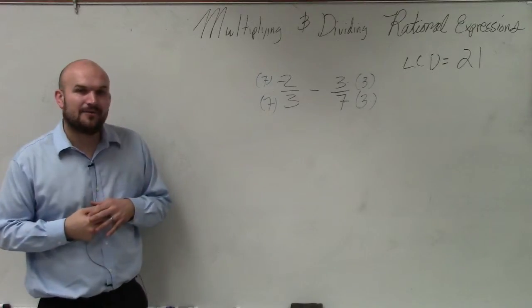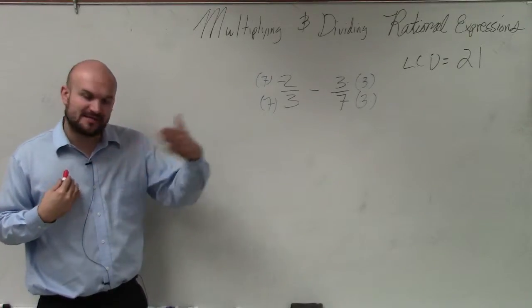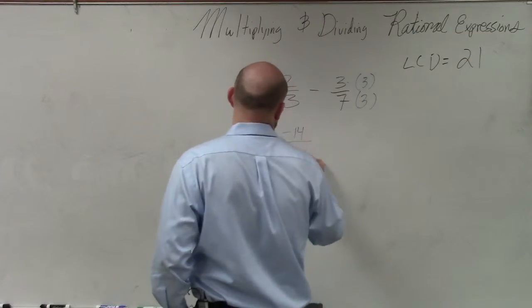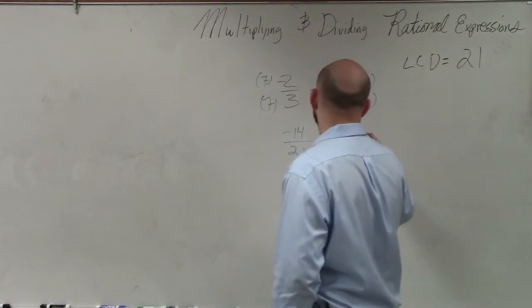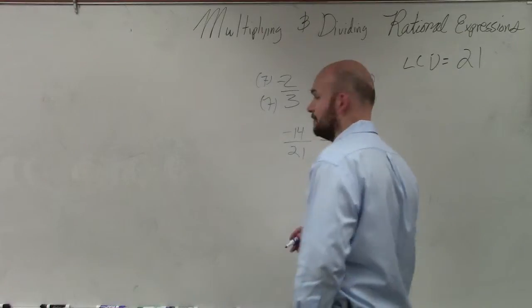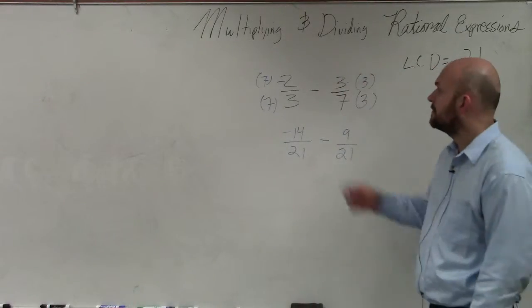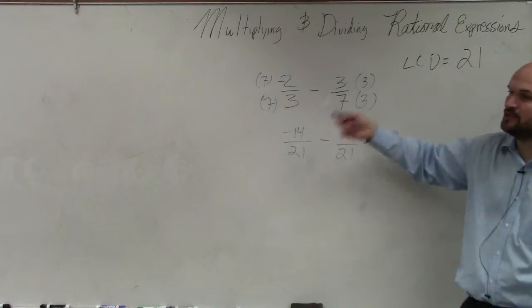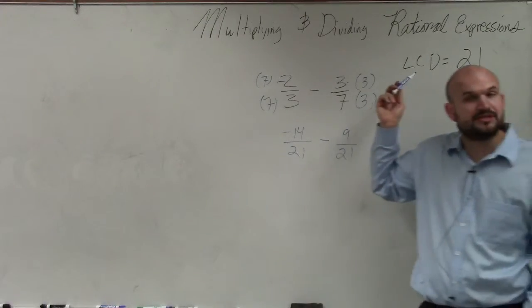So now when you multiply fractions, you're basically multiplying across. So what we obtain is negative 14 divided by 21 minus 9 divided by 21. 7 and 3 are your common denominators. You've got to determine what numbers to multiply to get your LCD, which in this case is 21.